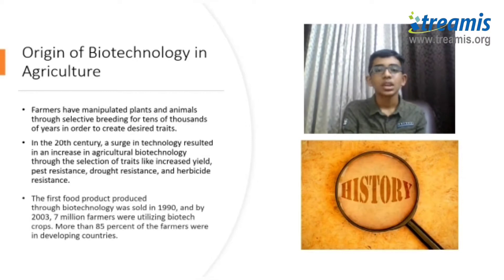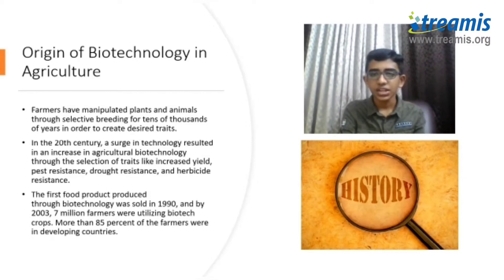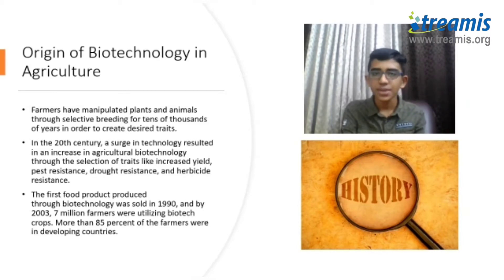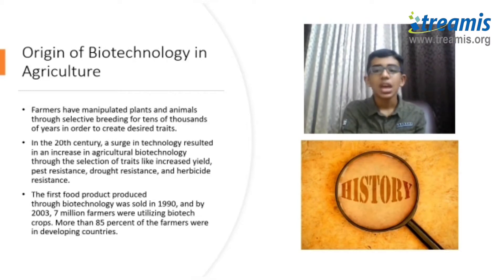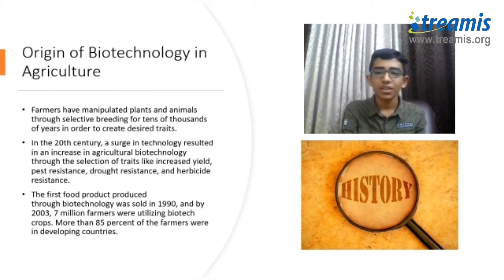In 1990, the first food product produced using biotechnology was sold in global markets, and in 2003, 7 million farmers were utilizing biotechnology and its crops. More than 85% of these farmers were in developing countries such as India and China.